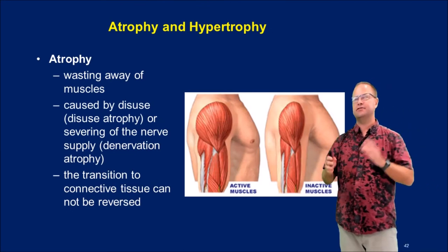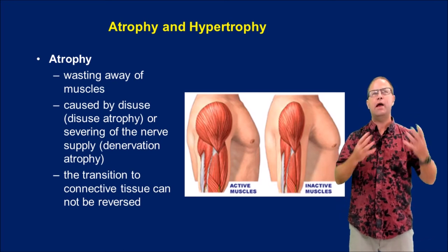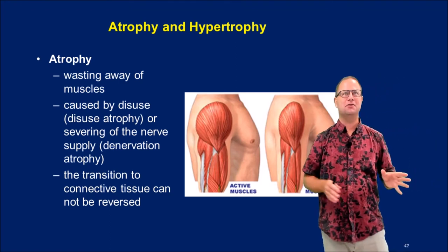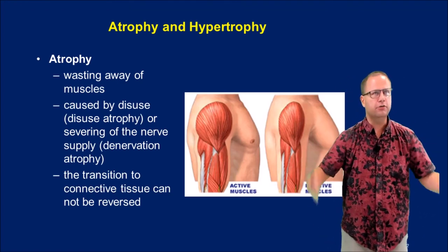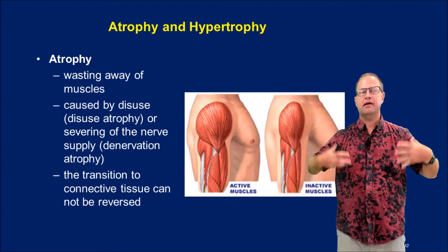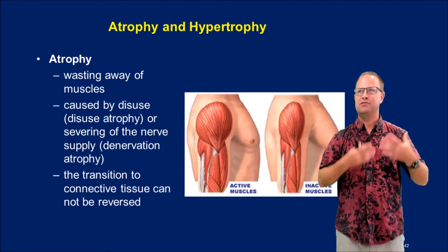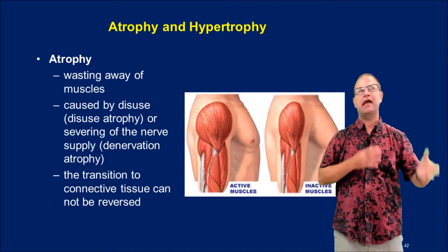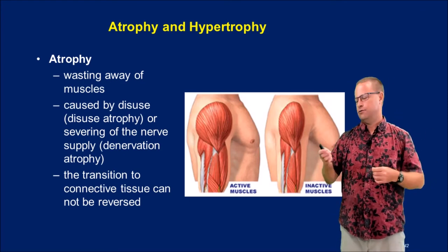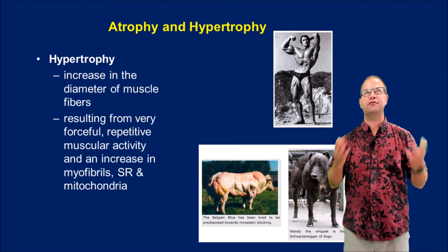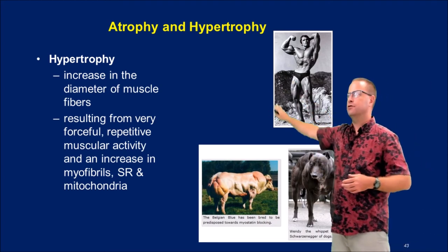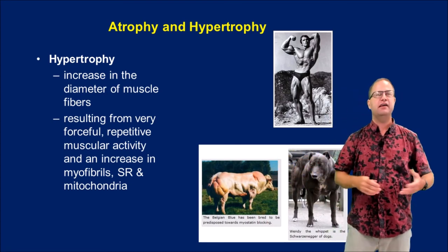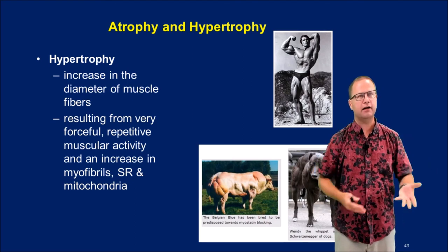Two important terms for the muscular system are atrophy and hypertrophy. Atrophy is the wasting away of muscle tissue — it occurs because a nerve has been severed or because the muscle is no longer being used. If you don't use that muscle, you lose it — it gets converted to connective tissue or even adipose tissue, and once that happens you can't gain those muscle fibers back; you can only build up the ones you have left. Hypertrophy is the opposite — greater than normal muscle growth, seen in bodybuilders. In humans it means working out regularly, possibly using steroids.